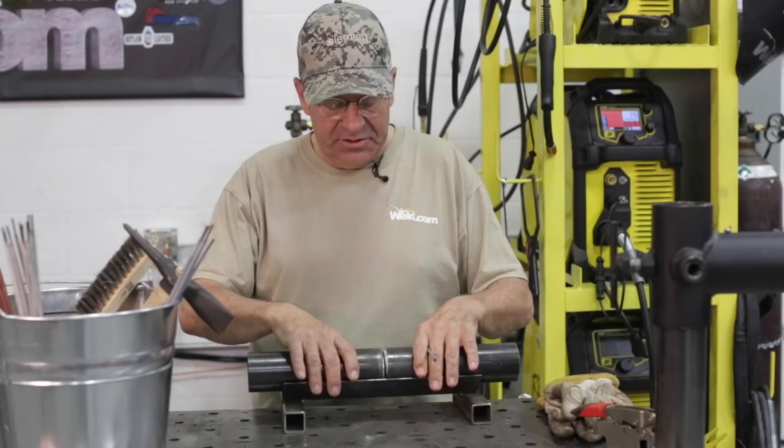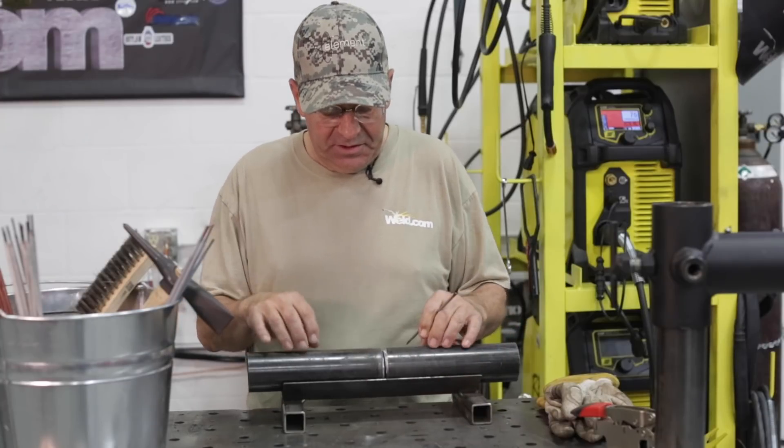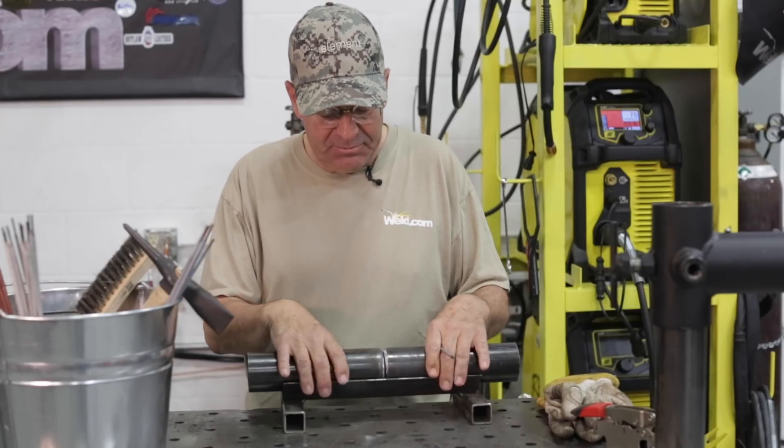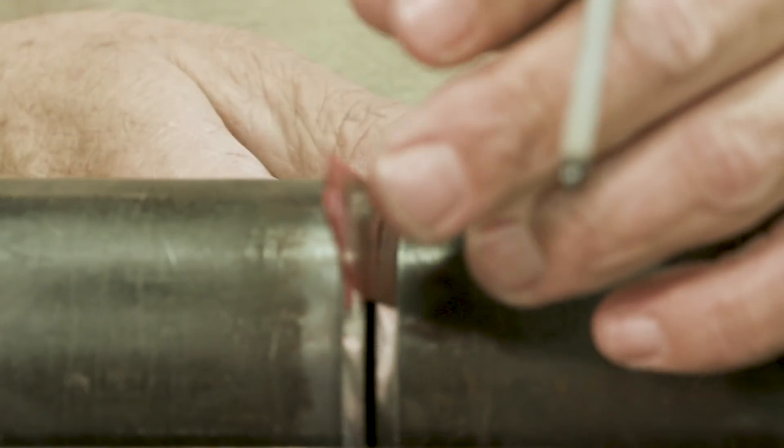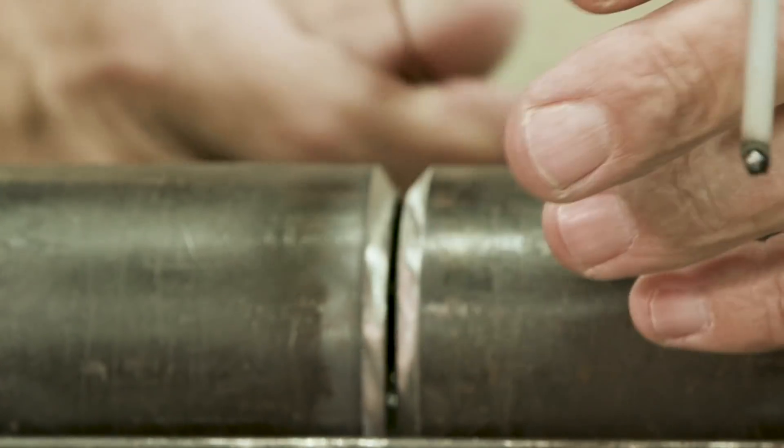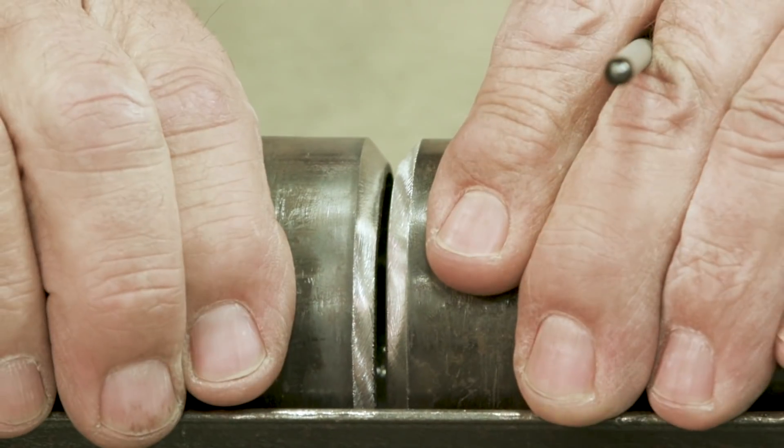I'm going to go ahead and tack up these test coupons in the test jig here, the fit-up jig. I'm using a spacer that I use for my downhill fit, and I've opened it up just a little bit more. I want just a little bit more gap because we're running uphill.